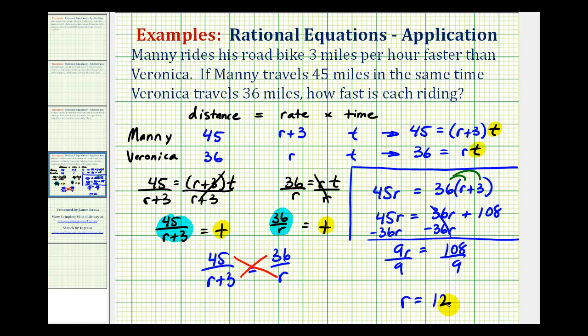But let's go back and take a look at the question one more time. We want to know how fast each person is riding. Notice that Veronica's rate is equal to r miles per hour, so Veronica is traveling 12 miles per hour, but Manny is traveling r plus three miles per hour, 12 plus three is equal to 15, so Manny is traveling 15 miles per hour.